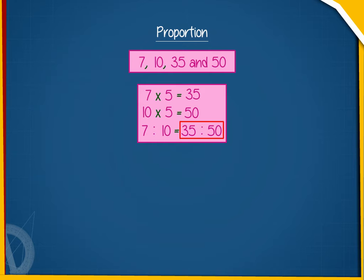In a proportion, the first and the fourth numbers are called extreme terms or extremes and the middle two terms are called as means. Here, 7 and 50 are extremes and 10 and 35 are means.